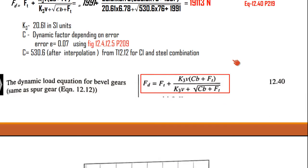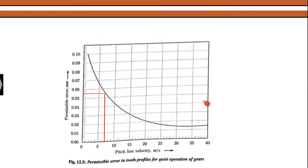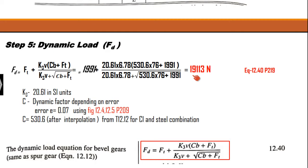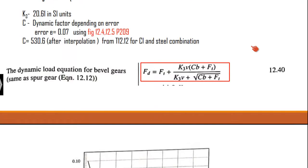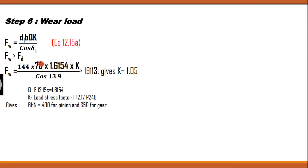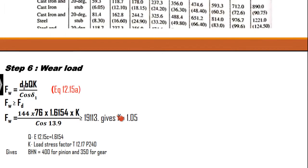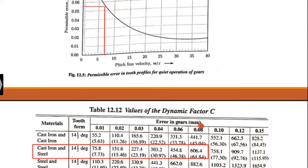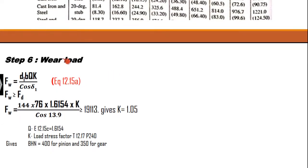Upon substituting all values, the dynamic load Fd obtained is 19,113 Newtons. The last step is the calculation of wear load, where Fw = D1 × B × Q × K divided by cos delta 1. Here it must be delta 1 specifically. Upon substituting the values of D1, B, Q, and delta, we get Fw in terms of K. We then equate Fw with the dynamic load, since dynamic load must be less than wear load.